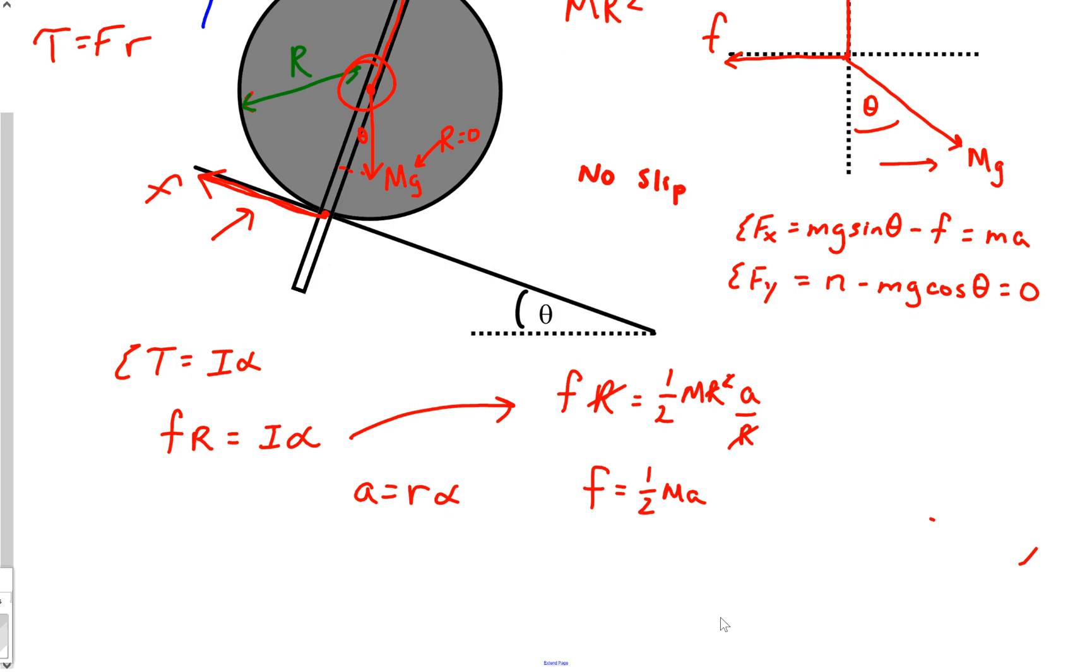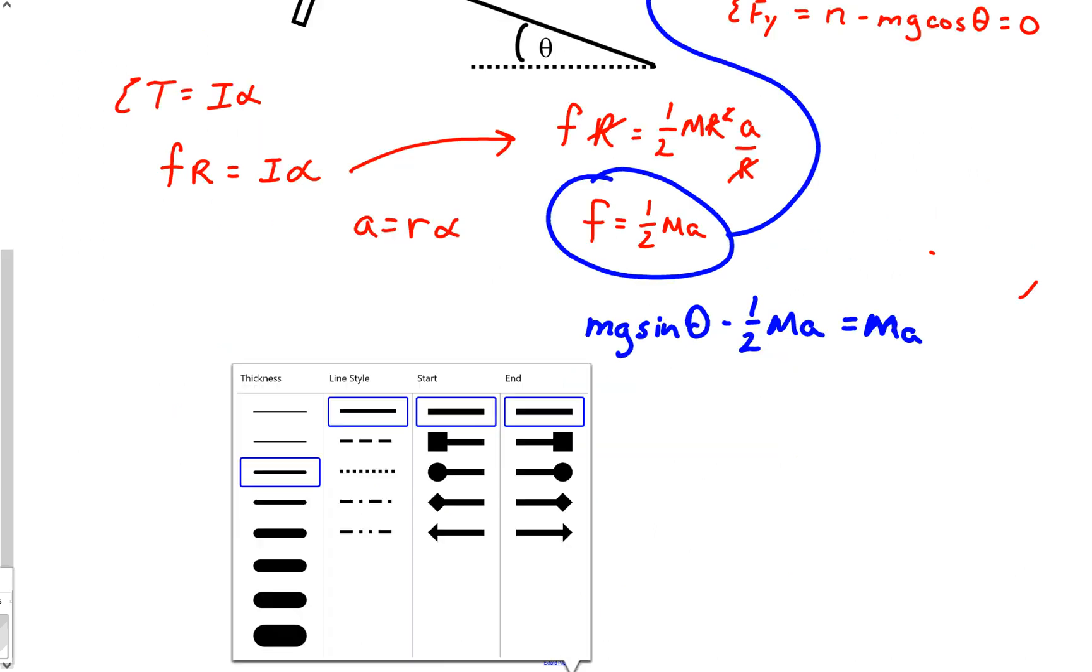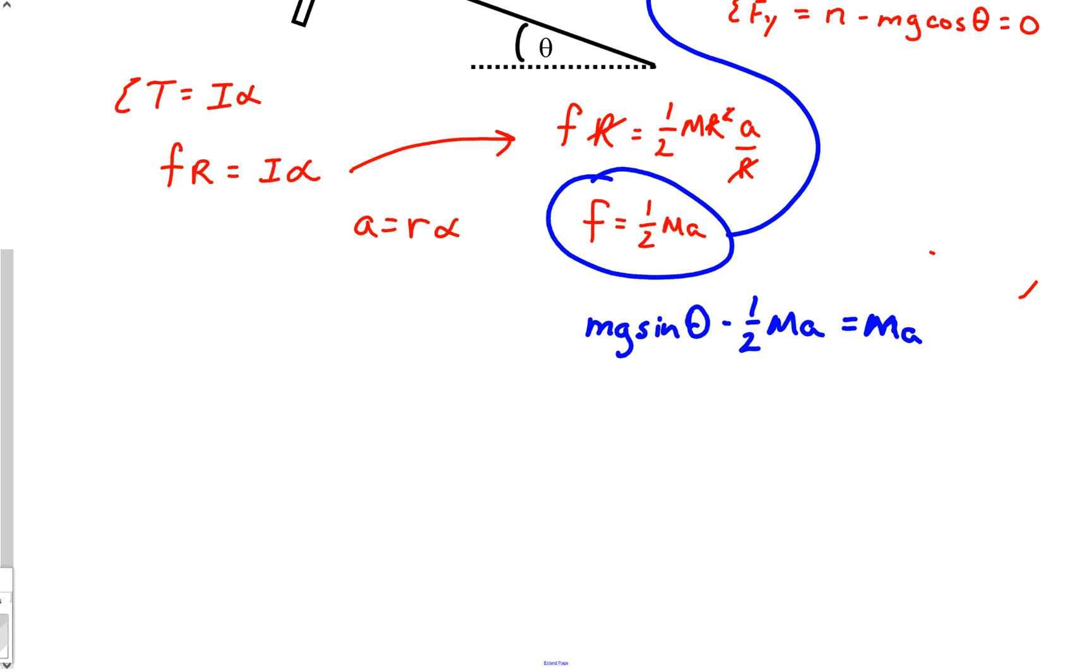Now that's pretty interesting. So let's see if we can't solve this problem for a. Let's take that equation and we'll just substitute it straight back into there at this point. So how about this: mg sin θ minus one-half ma is equal to...